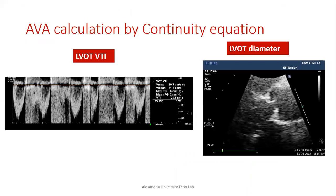To calculate aortic valve area by continuity equation, we obtain the LVOT VTI and velocity across the LVOT. We place the cursor 3 to 5 mm below the aortic valve, just immediately proximal to the flow convergence zone. The most common cause of calculation errors is the measurement of the LVOT diameter. We should use a mid-systolic frame at maximum aortic valve opening at the peak of the T-wave, zoom at the LVOT, and measure from the base of the right coronary cusp downward 90 degrees to obtain the maximum LVOT diameter.